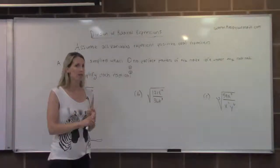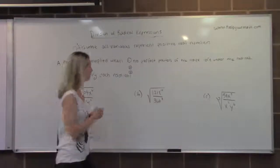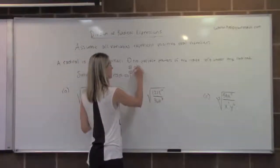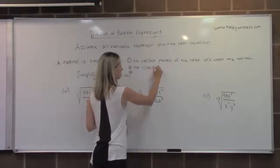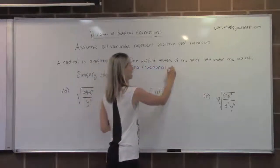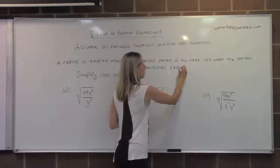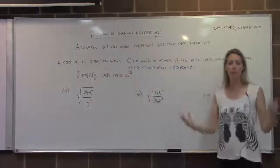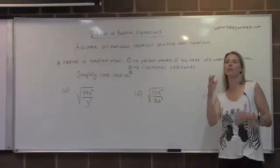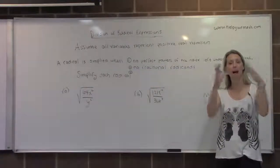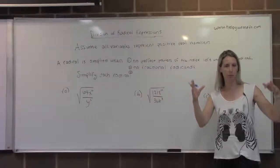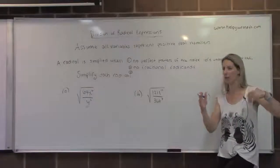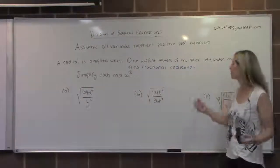The second one is that we never leave fractions under the radical. So no fractional radicands. There's a few different things that we can do for this. Just like how we can combine and take apart factors under the radical that are being multiplied, we can do the same thing with division.